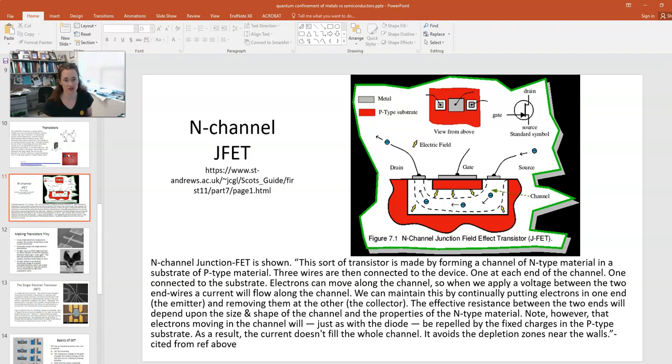So what is a bulk transistor like? Well this is one kind of transistor, it's an n-channel junction field effect transistor, and what you do here is form a channel of n-type material in a substrate of p-type material, and then you have your three wires as shown in this diagram, your source, your gate, and your drain.